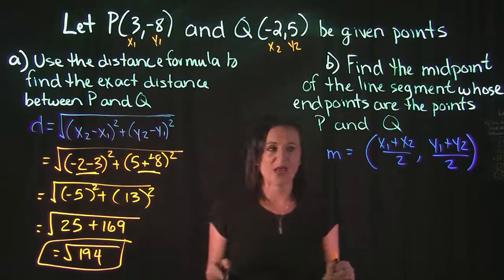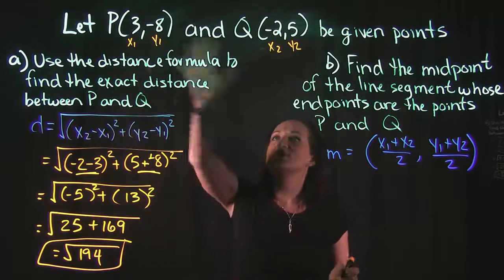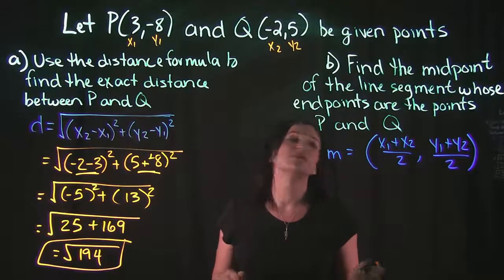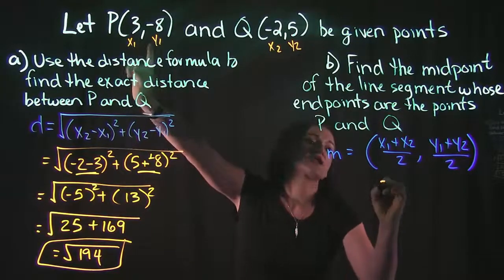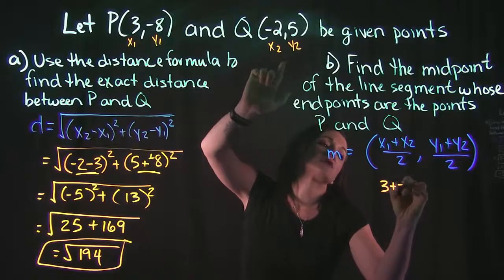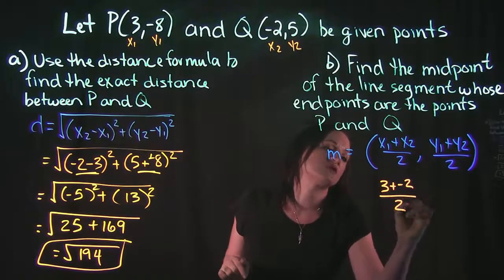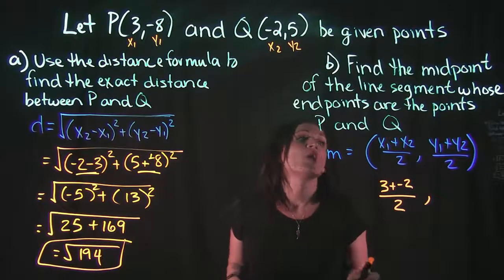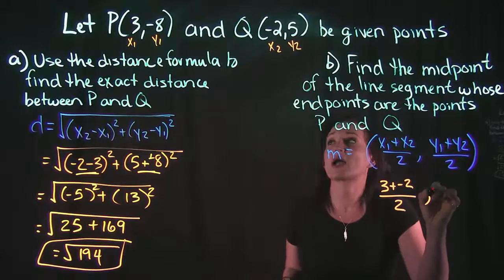We're using the same points here. So let's see, x1 plus x2. x1 is 3, plus x2 is -2, and we'll divide that by 2. y1 plus y2, so y1 is -8, plus y2 is 5, and we'll divide that by 2.